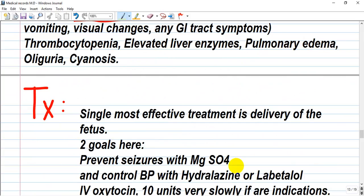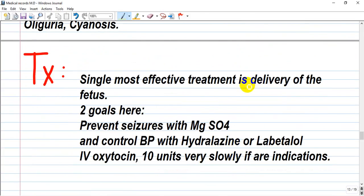Treatment - the single and most effective treatment is delivery. If placenta is expelled, no tissue that's creating problems. Two goals here are to prevent seizures with magnesium and control of blood pressure with hydralazine or labetalol. Labetalol is a lovely drug because it has less side effects. Hydralazine we know is associated with systemic lupus erythematosus, a drug-induced one. We give IV oxytocin, usually 10 units, very slowly that is dissolved in a normal saline solution.